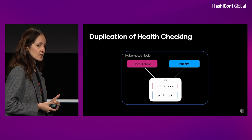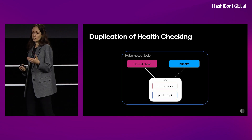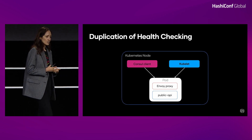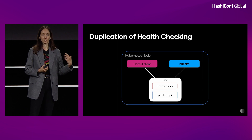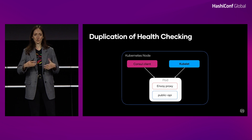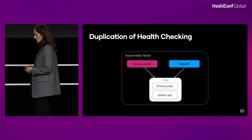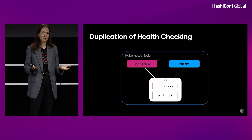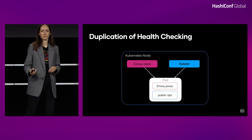The second challenge we're seeing is this duplication of health checking. In container orchestrators, you already probably have some health checking built in. In Kubernetes, we have a kubelet running on a node that can run health checks against both the Envoy proxy and our application. But because Consul clients also need to be responsible for health checks so the service mesh knows how to route traffic, the Consul clients also need to run these health checks. It's really redundant — container orchestrators already have their own health checking and failure detection, so we don't necessarily need Consul clients to also be running those health checks.